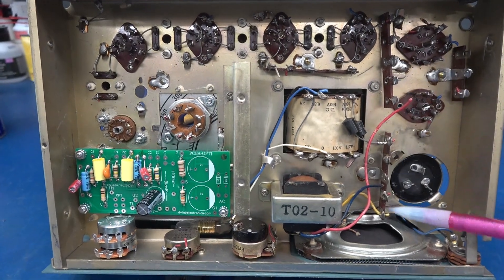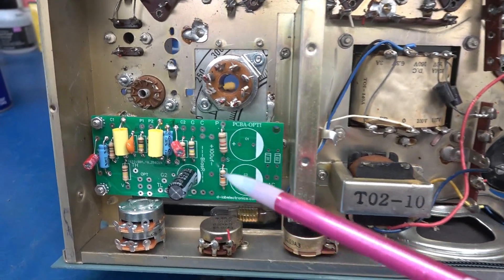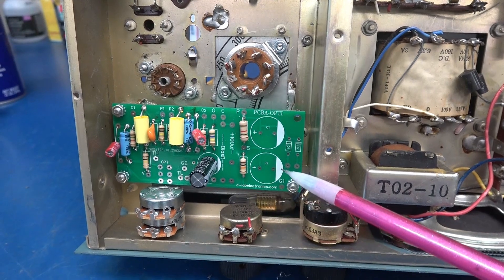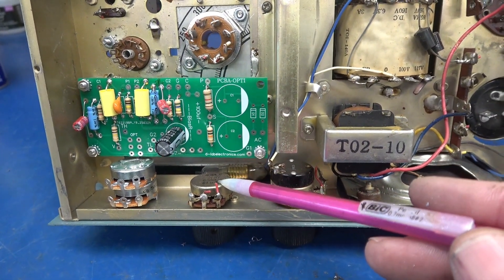Alright, bottom side. Everything has been removed except for the rectifier diodes and the output transformer. Here is the new Optiplex board installed. There's the Optiplex control.